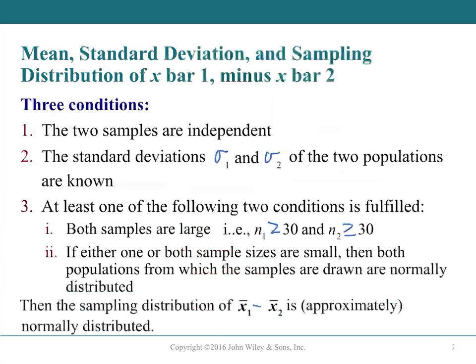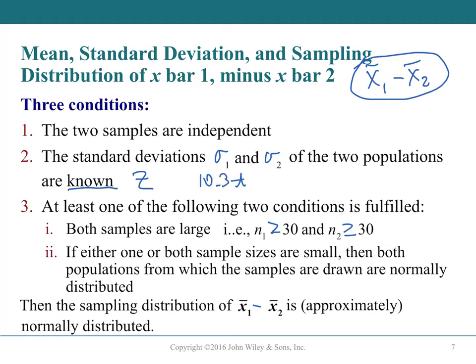Three conditions are required for the sampling distribution of x̄₁ - x̄₂: the samples must be independent; population standard deviations σ₁ and σ₂ must be known (allowing use of z); and at least one of these must hold—both samples are large with n₁ and n₂ each at least 30, or both populations are normally distributed.